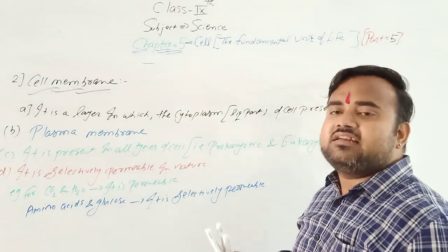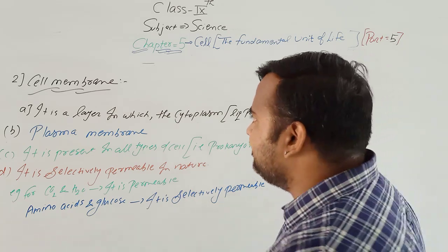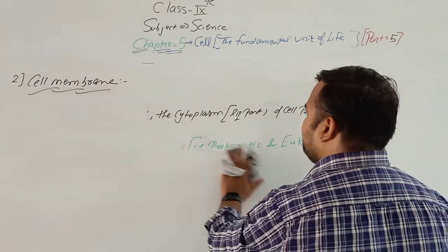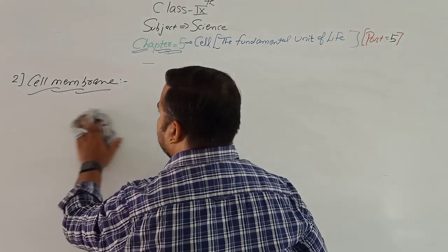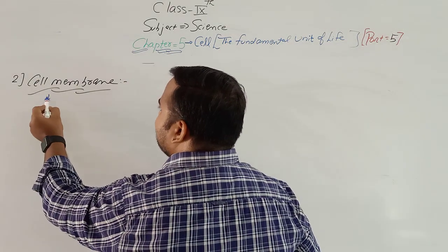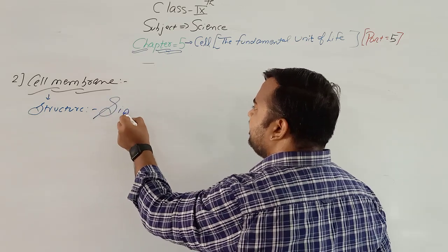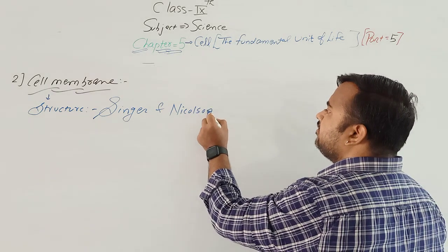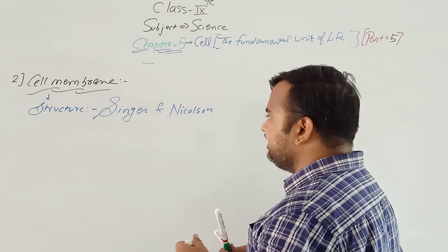Now we are going to see the structure of cell membrane, which was given by Singer and Nicolson. The cell membrane structure was given by Singer and Nicolson, and we will see this structure in detail.